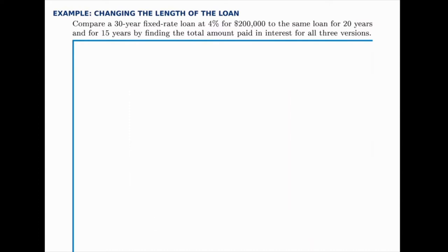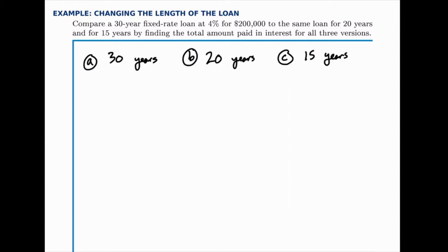In this example, we'll compare three long-term loans for the same amount of money at the same interest rate — one for 30 years, one for 20 years, and one for 15 years. For each one, we just need to calculate the payment amount. Skipping that calculation, I'll just show you the values for each one.